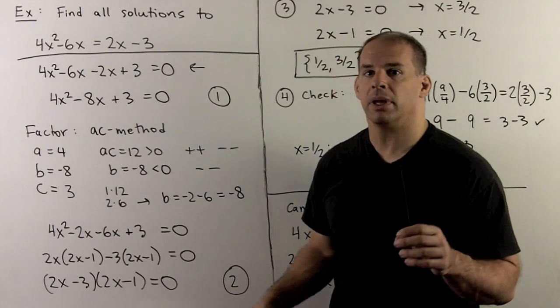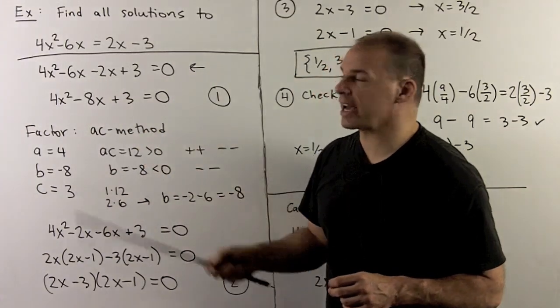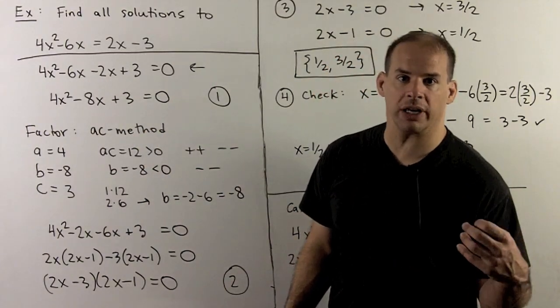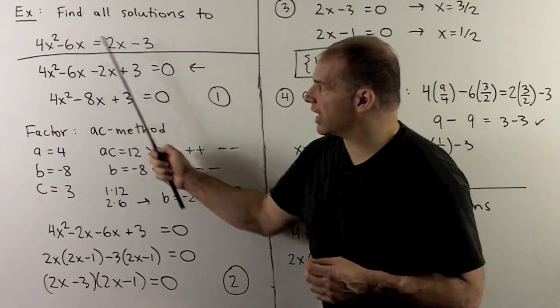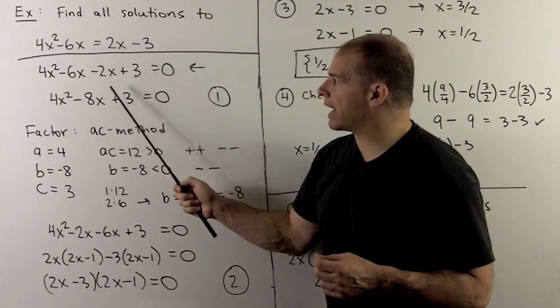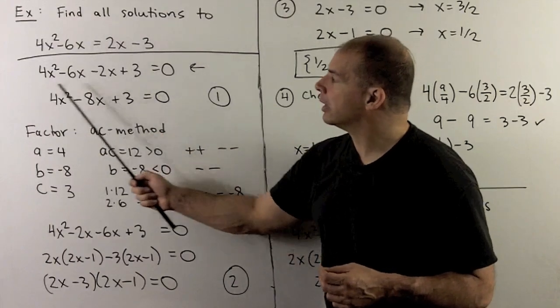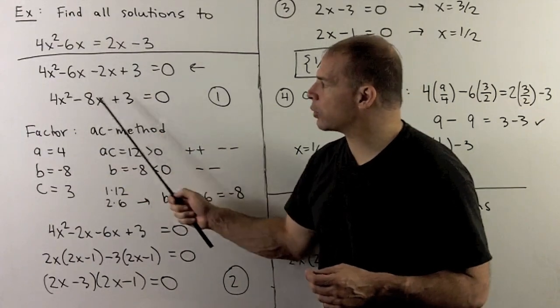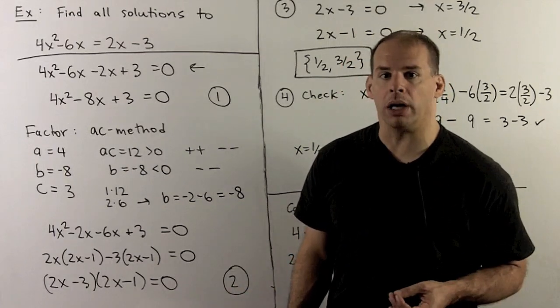First example, we want to find all solutions to the equation 4x squared minus 6x equals 2x minus 3. First step, we push everything to one side. So the 2x goes over as a minus 2x, minus 3 goes over as a plus 3. We simplify, we get 4x squared minus 8x plus 3 equals zero. That's in the form that we're looking for in step one.